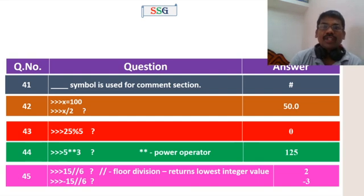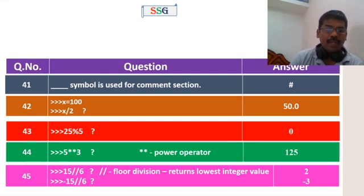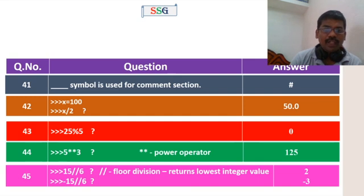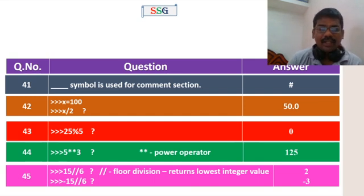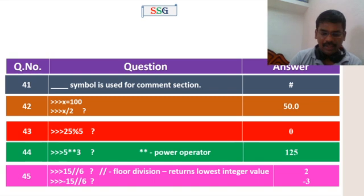Now, 15 divided by 6 is equal to 2.5, and the floor (lowest) value is equal to 2. That means 15 divided by -6 is equal to -2.5, and then the floor (lowest) value is equal to -3.